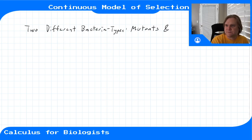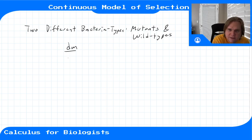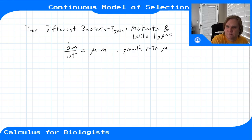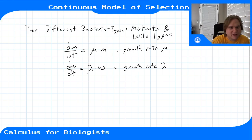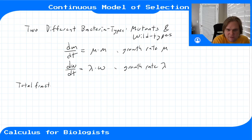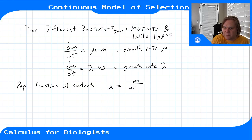We have two different bacteria types: mutants and wild types. The mutants are governed by dM/dt = μ·M, so they have growth rate μ. The wild types W have growth rate λ. We want to know which one is going to become the most populous. We're interested in the population fraction x = M / (W + M), the number of mutants divided by the total population.